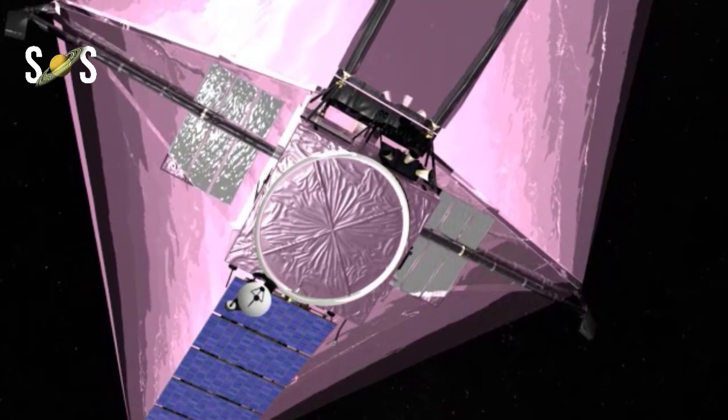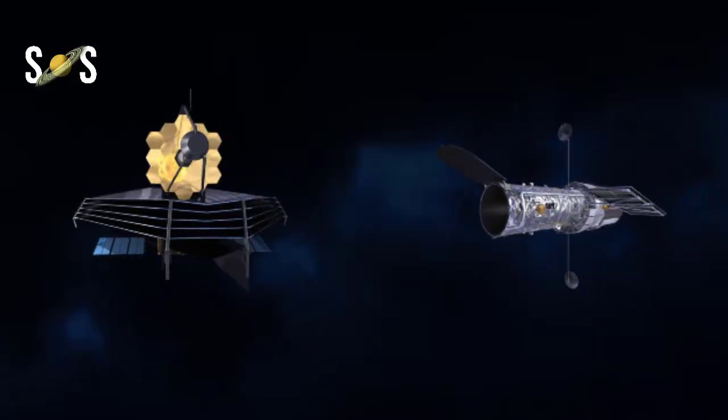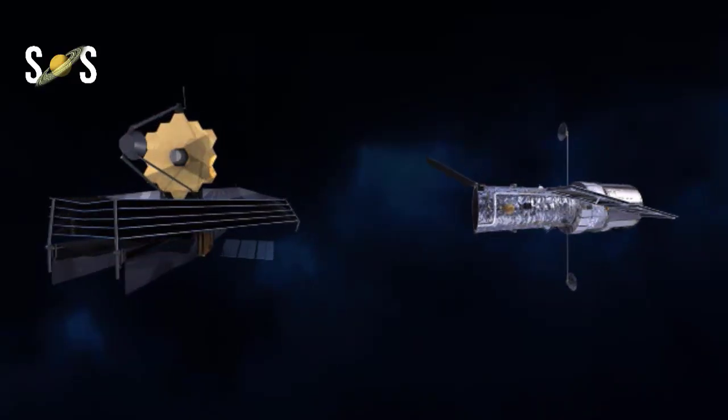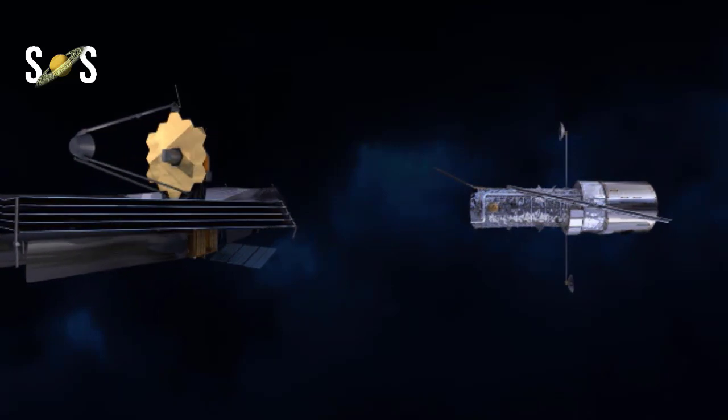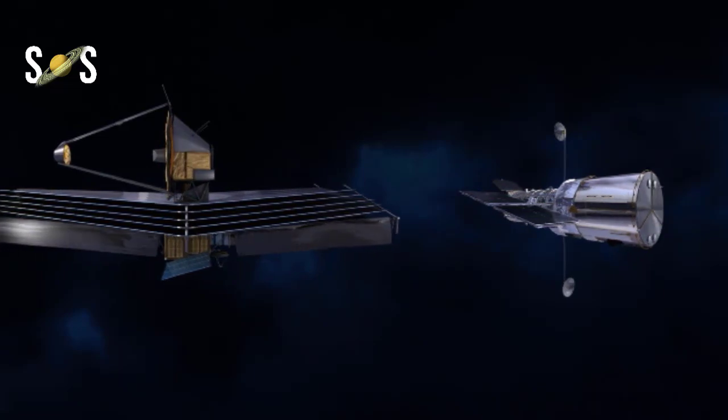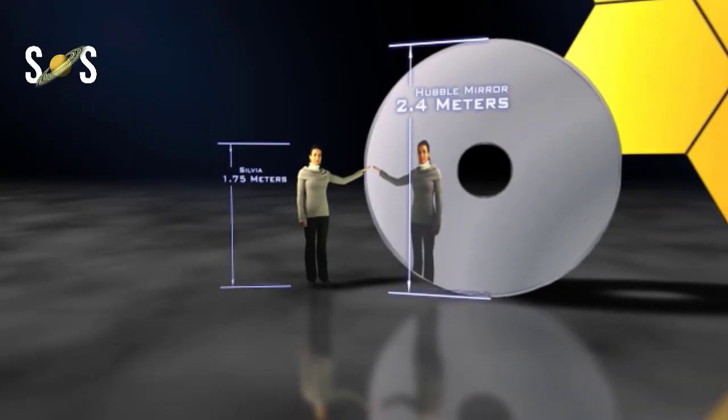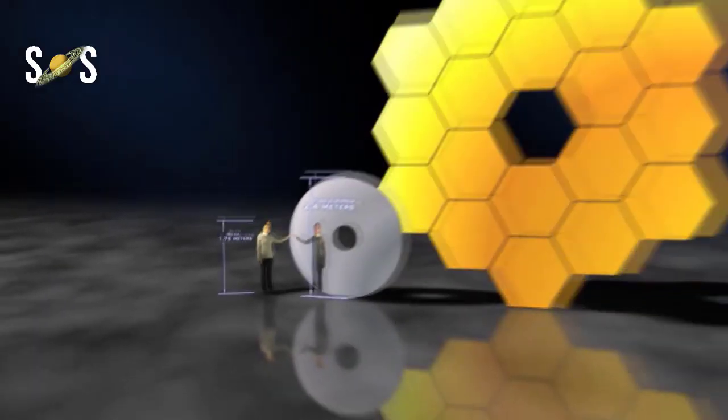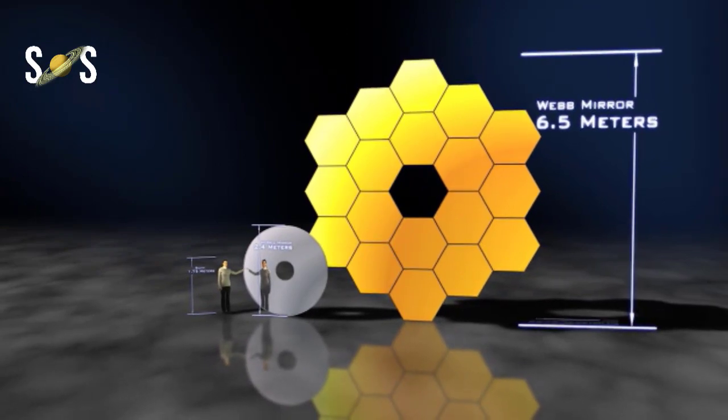How many times more powerful will James Webb be than Hubble? The Webb is the successor to Hubble, and it's 100 times more powerful. Webb also has a much bigger mirror than Hubble. This larger light collecting area means that Webb can peer farther back into time than Hubble is capable of doing.